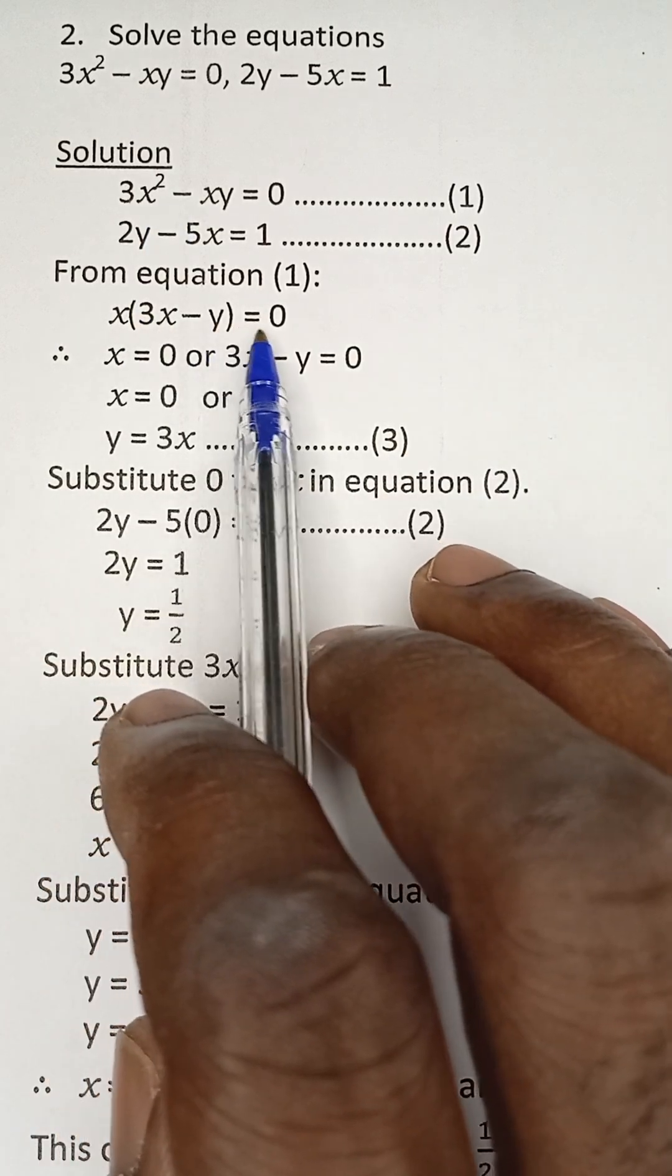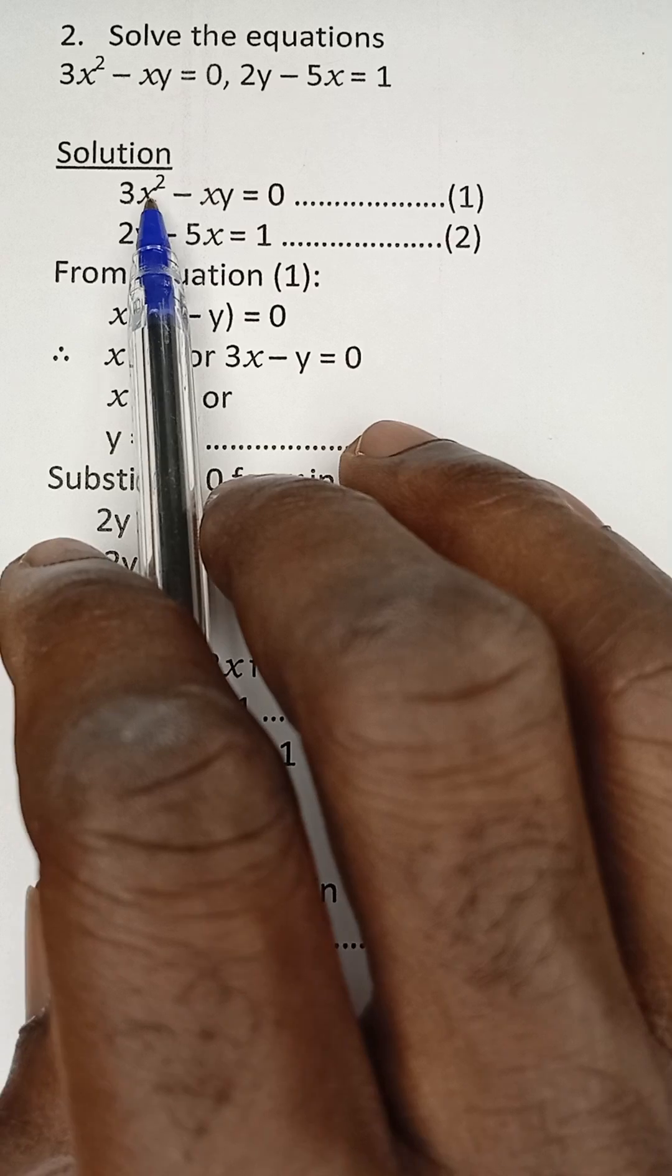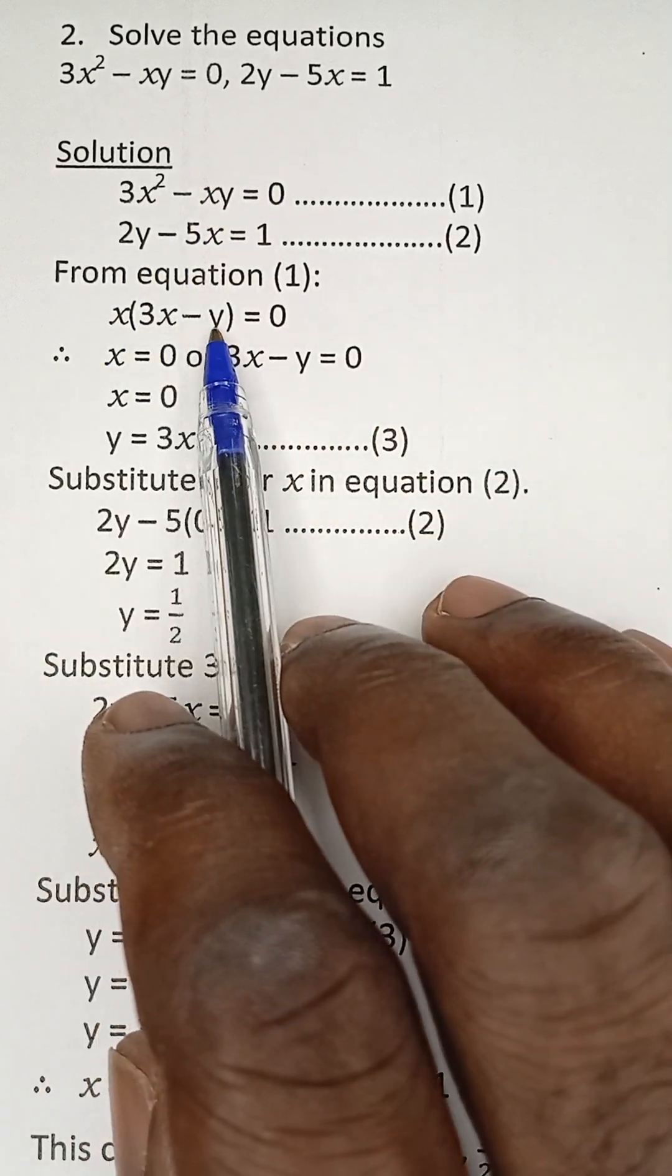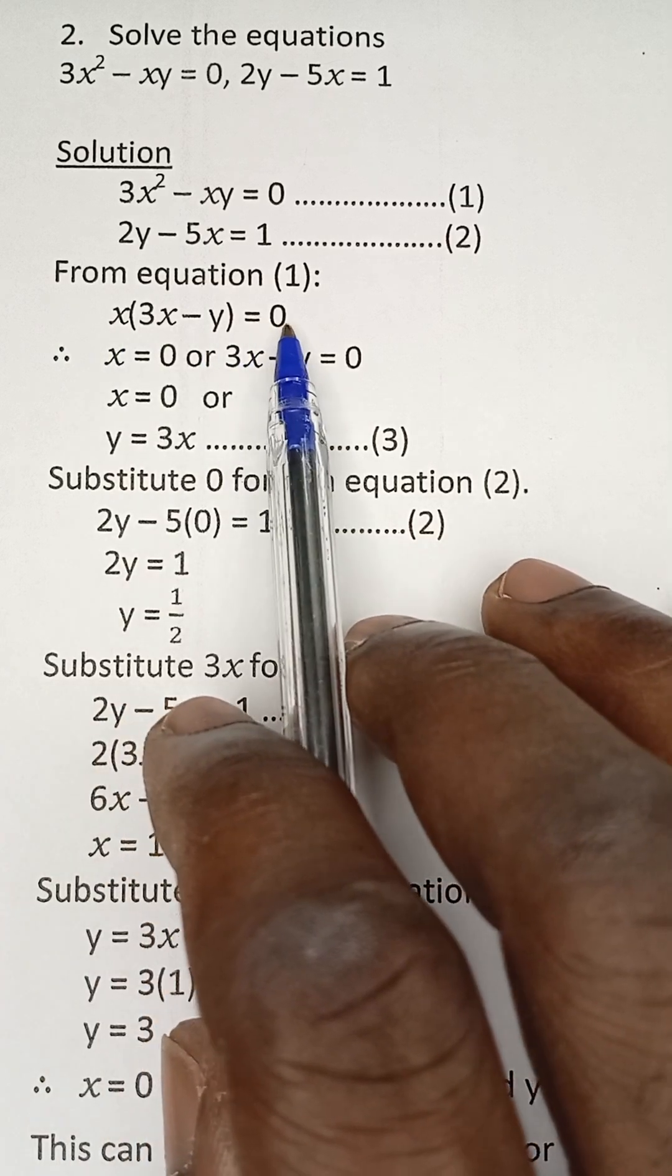We have x(3x - y) = 0. 3x² divided by x gives us 3x, and xy divided by x gives us y. Once this has been factored and is equal to 0,